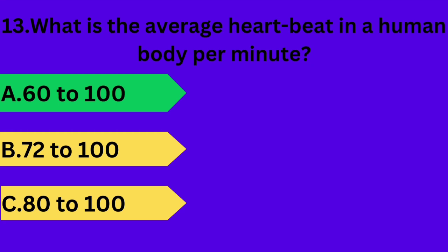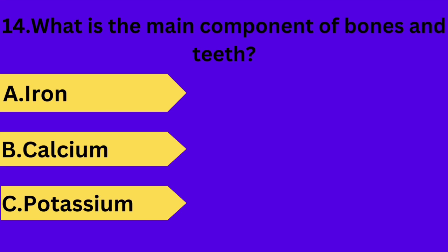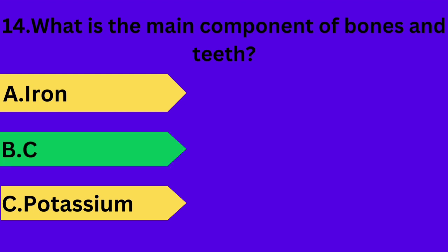And next question is: what is the main component of bones and teeth? Option A: iron. Option B: calcium. Option C: potassium. Your time starts now. Answer is option B: calcium.